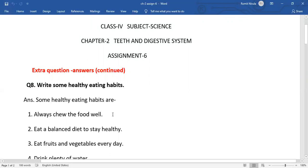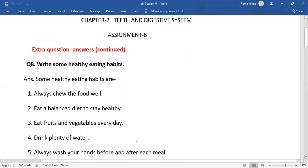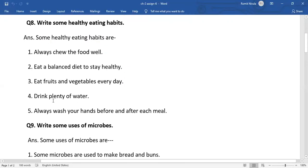Question 8: Write some healthy eating habits. Answer: Some healthy eating habits are: always chew the food well, eat a balanced diet to stay healthy, eat fruits and vegetables every day.